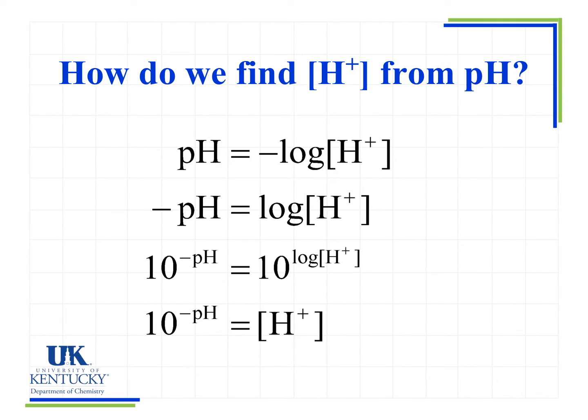Now that we know how to get from the H plus concentration to the pH, we need to look at the reverse. How do we get from pH to H plus? When we look at the equation pH equals negative log of H plus, I need to rearrange this equation to solve for the H plus concentration. First, I divide both sides by a negative 1, so negative pH equals log of H plus. Then I take both sides to the power of 10, so 10 to the minus pH and 10 to the log of H plus. 10 and log are opposite functions, so what I end up with is 10 to the minus pH equals the H plus concentration.